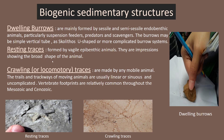Let's look at some biogenic sedimentary structures. Dwelling burrows are formed by sessile and semi-sessile endobenthic animals, particularly suspension feeders, predators, and scavengers. The burrows can be simple vertical tubes, U-shaped, or more complicated burrow systems. Resting traces are formed by vagile epibenthic animals and show the broad shape of the animal. Crawling traces, also called locomotory traces, are made by any mobile animal; their trails and trackways are usually linear or sinuous. Vertebrate footprints are relatively common throughout the Mesozoic and Cenozoic time.